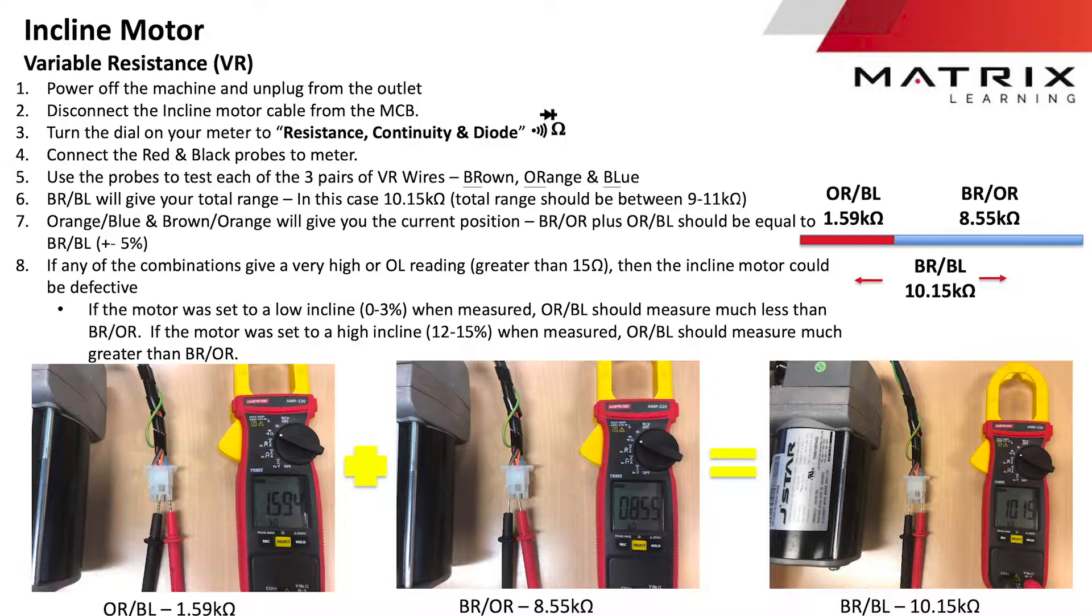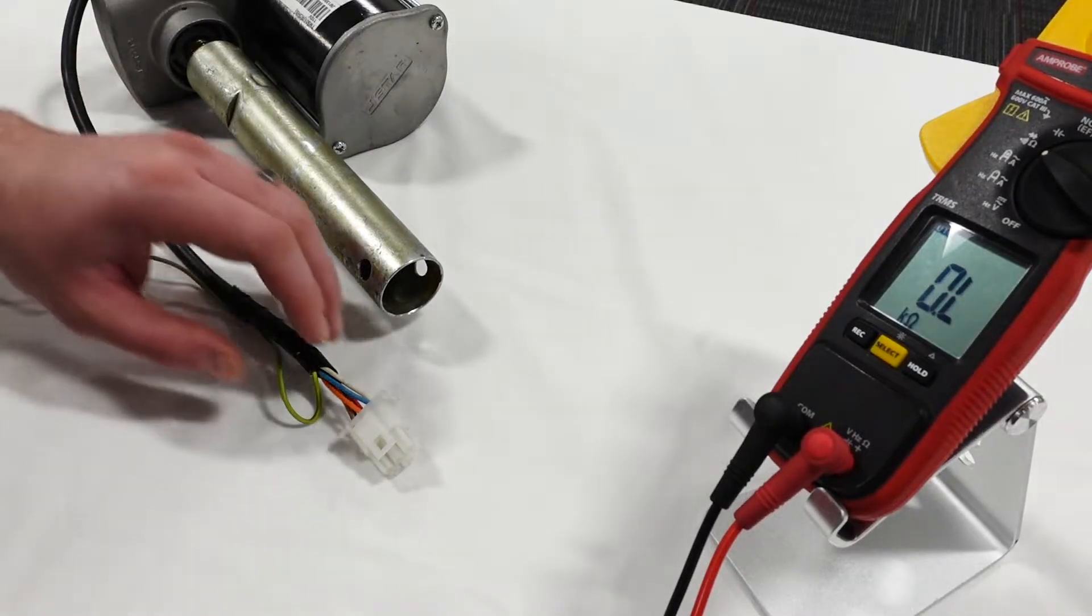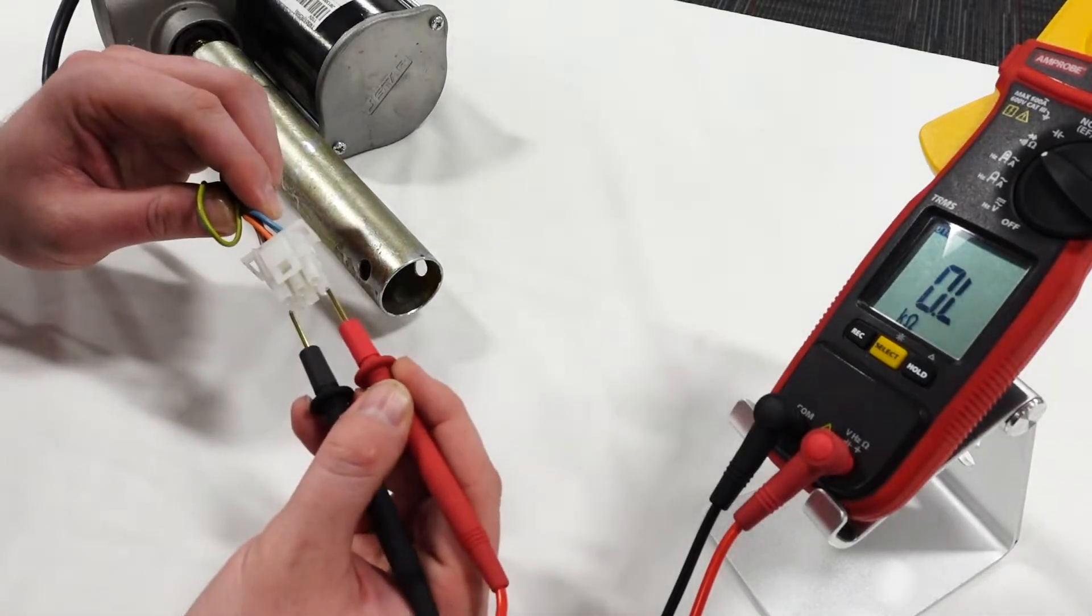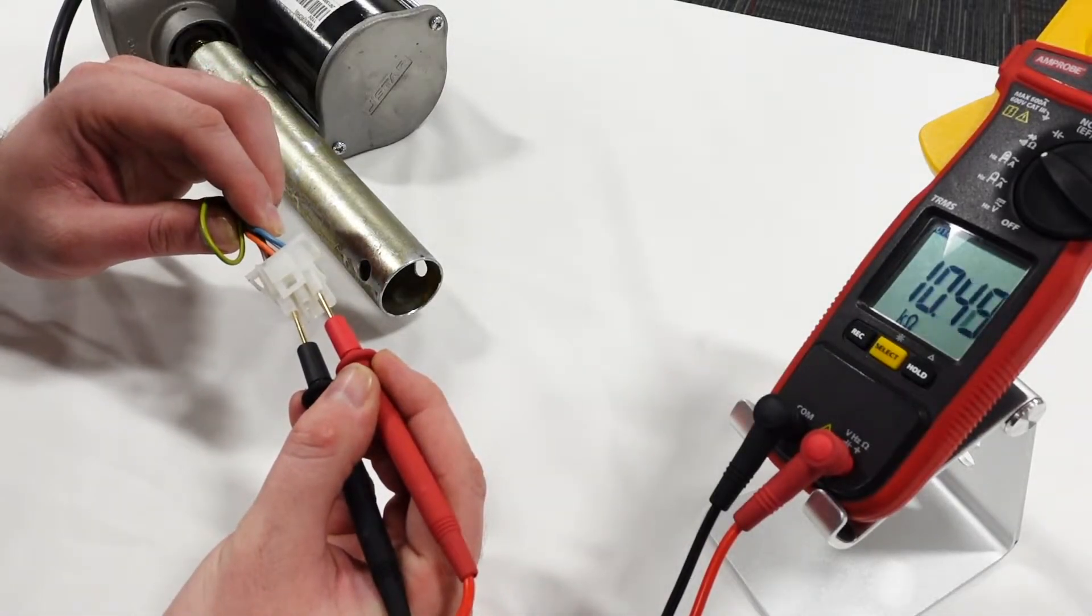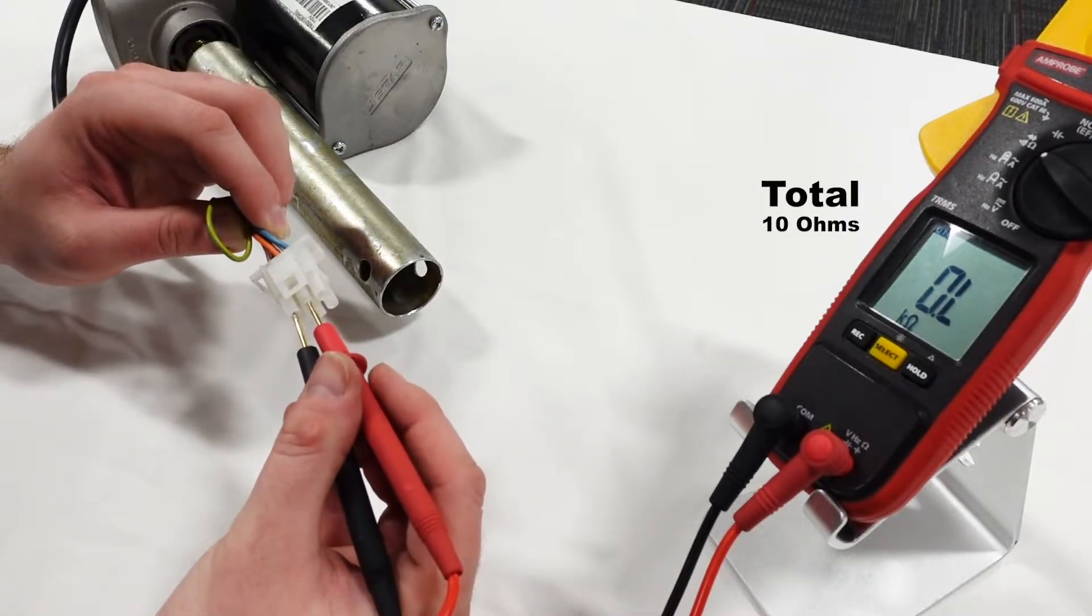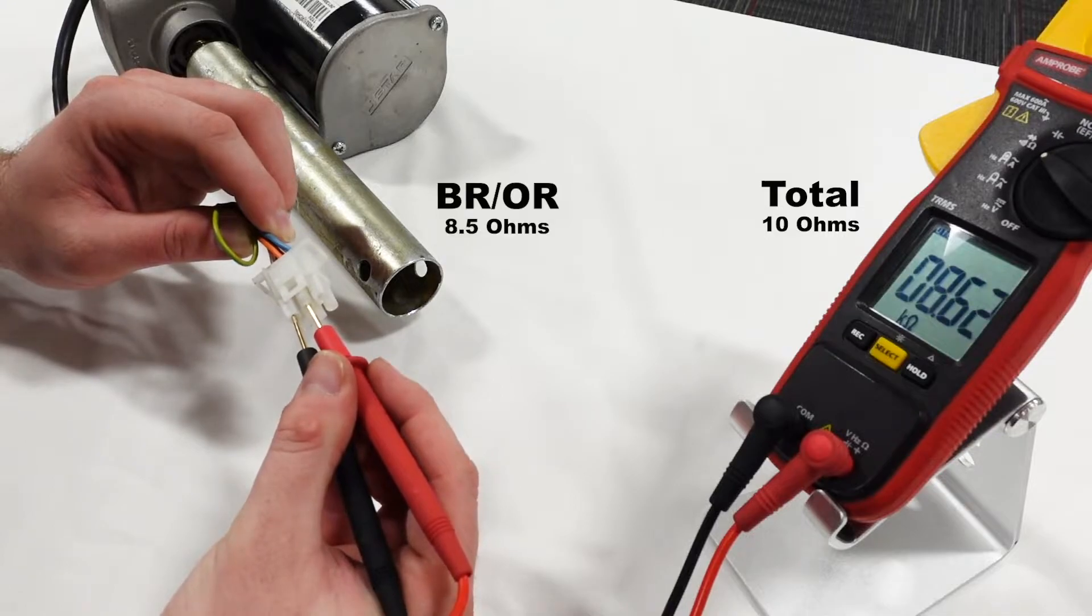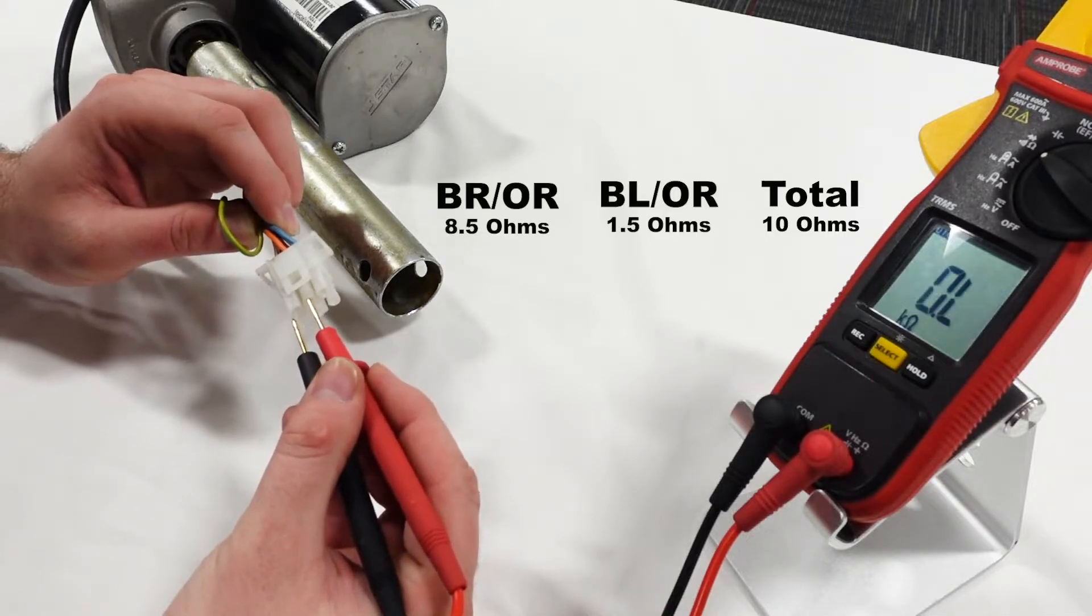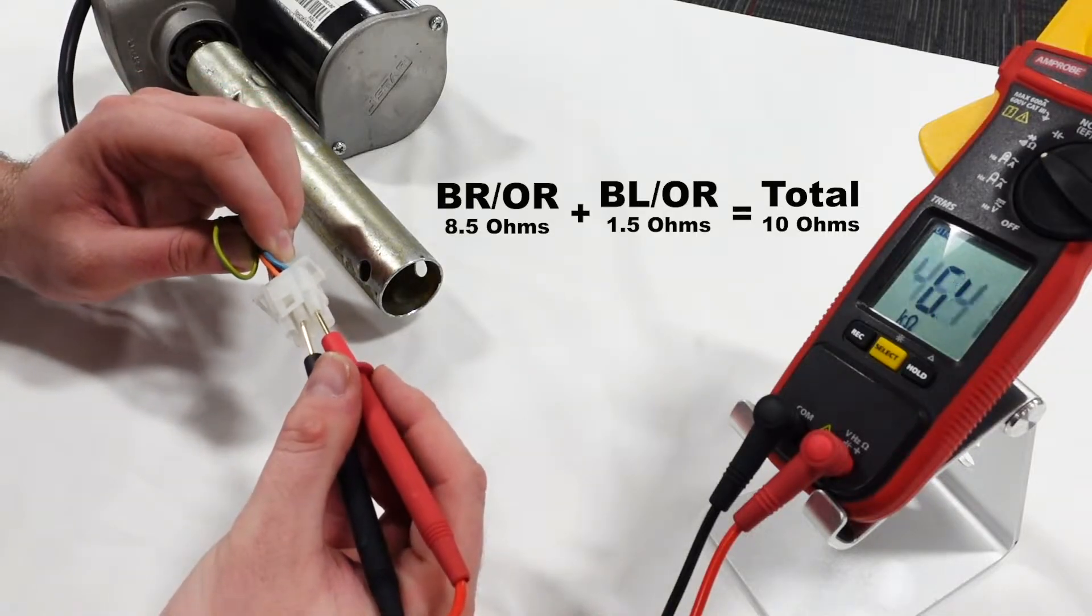To test the elevation motor, we will check the resistance on all three leads of the potentiometer: brown, orange and blue. Brown and blue wires will give you the total range of the variable resistor, it should be approximately 10 ohms. If brown and orange is approximately 8.5 ohms, then orange and blue should give you around 1.5 ohms to make a total of 10 ohms.